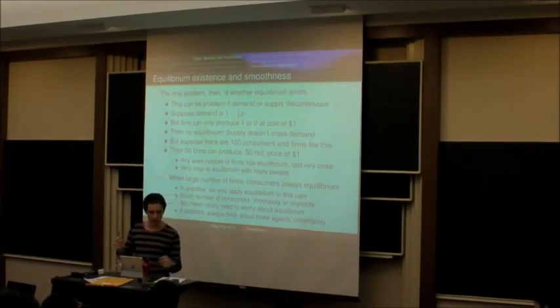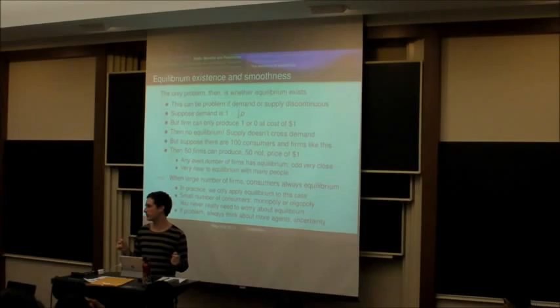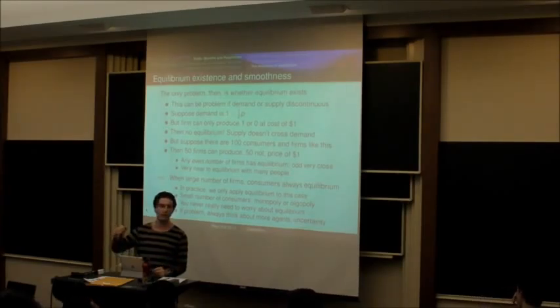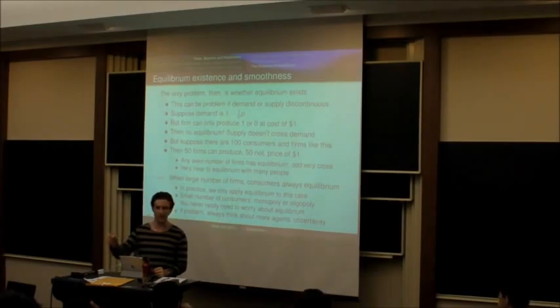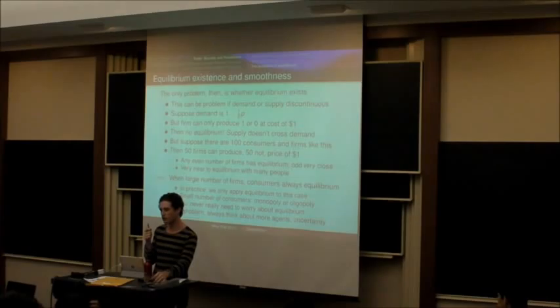So what that basically says is non-existence of equilibrium is not something where you're like, oh, my prediction is that in the world there's no equilibrium. That's not the right way to think about it. The right way to think about it is if my model says that there's no equilibrium, that means I'm using the wrong model and I should go back and re-examine my assumptions. It's almost like reaching a contradiction in the model. It says you haven't really modeled things in the right way.